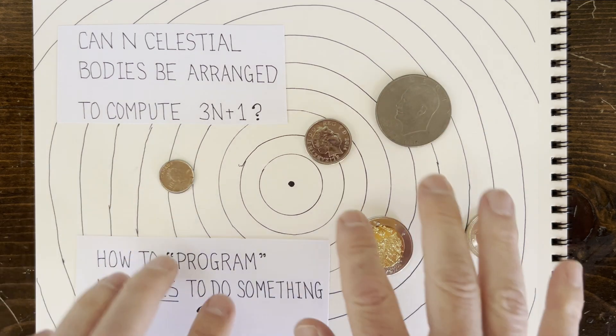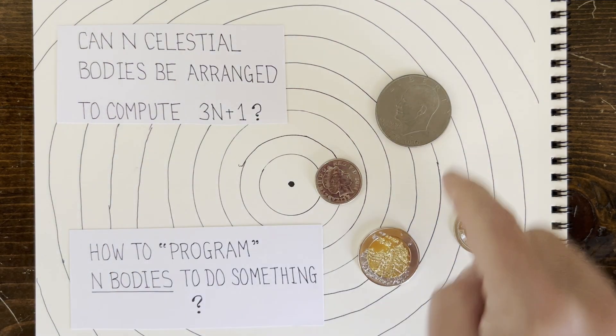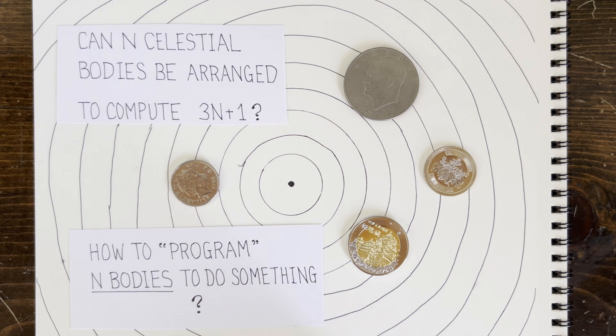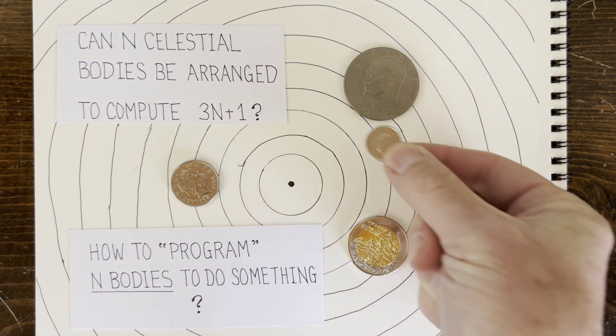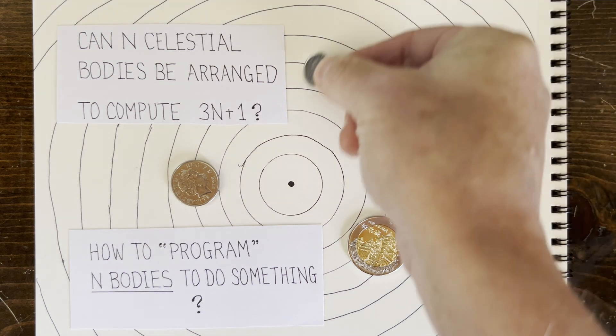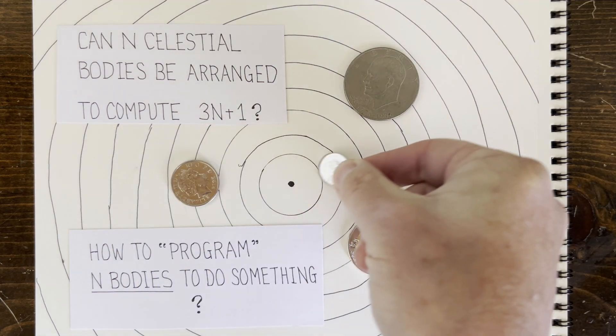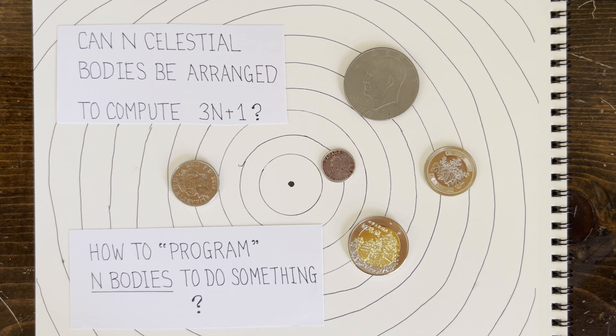Well, astronautical engineers do it all the time. They initialize the positions and velocities of the planets and moons as they observe them, and then they figure out where to put a tiny moving spaceship so that it'll visit all the planets and moons using just the gravitational forces without any extra fuel.